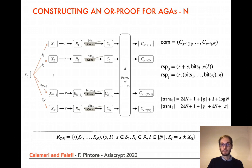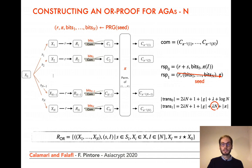For one of the linear terms, λn, the solution is easy. A pseudorandom generator can be used to deterministically produce, from a random seed of length λ, the random group element R, the bits used to create the committed values, and also the permutation pi. Then in the response for challenge 1, it is sufficient to reveal the seed, which has size λ. So we have replaced the last three terms of size(trans_1) with only λ.